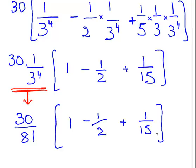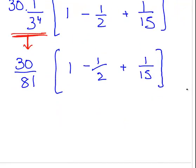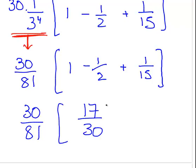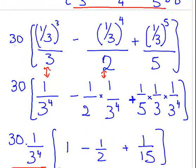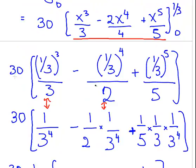That is 17 over 30. So 30 over 81 times 17 over 30. There we go, 17 over 81. So what helps there is essentially just being very careful with these fractions here.